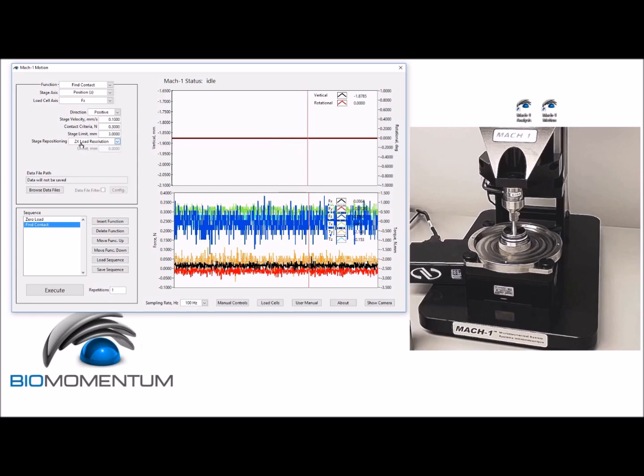We can now execute the sequence and report the current position of the vertical stage axis as the thickness of the sample.